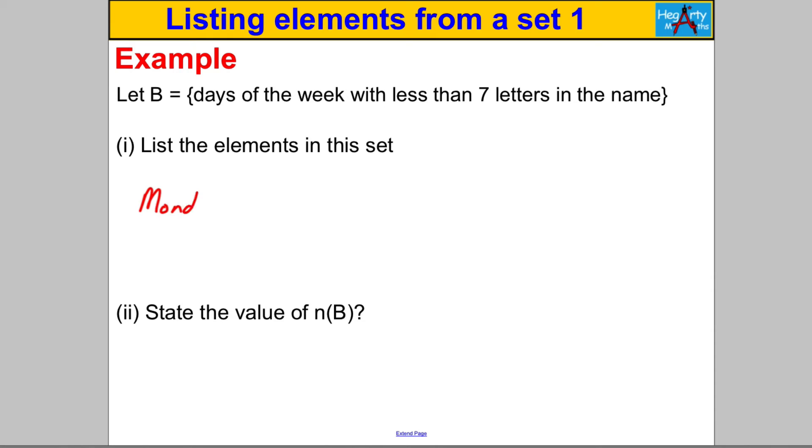Well Monday has six letters, Tuesday has seven, Wednesday has more than seven, Thursday has seven, Friday only has six, Saturday has more than seven, and Sunday only has six. So they are the elements in our set. We've listed them. What is n(B)? That's how many elements in the set. There are three elements in this set and we're done.